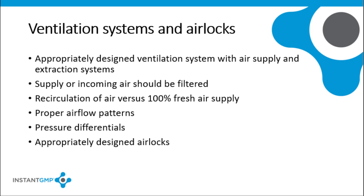If a ventilation system supplies 100% fresh air, then different rooms can be used for different products at the same time. However, if a system includes recirculation, then all rooms supplied by that system must be processing the same product, or the air must be filtered to an appropriate standard. If no filters are installed, then all ductwork will have to be cleaned during product changeover.